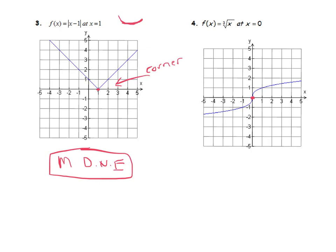How about this situation, the cube root of x at x = 0? So x = 0 is right here, and if we draw our tangent line, what we get is a completely vertical line. So the tangent line is completely vertical in this case. So a vertical line has an undefined slope, so the slope is undefined.